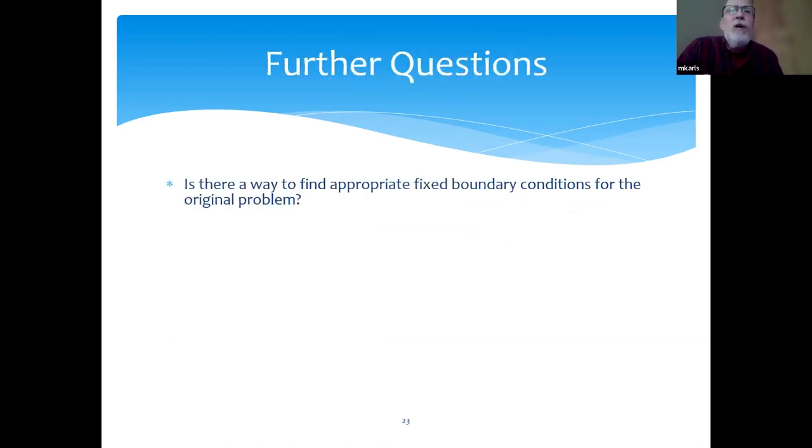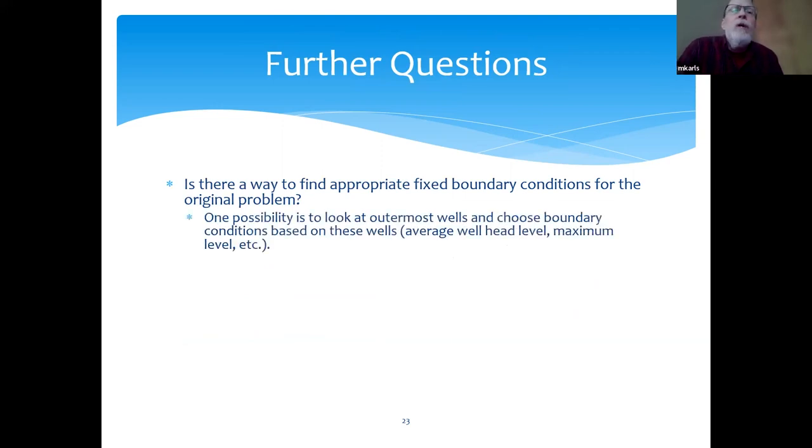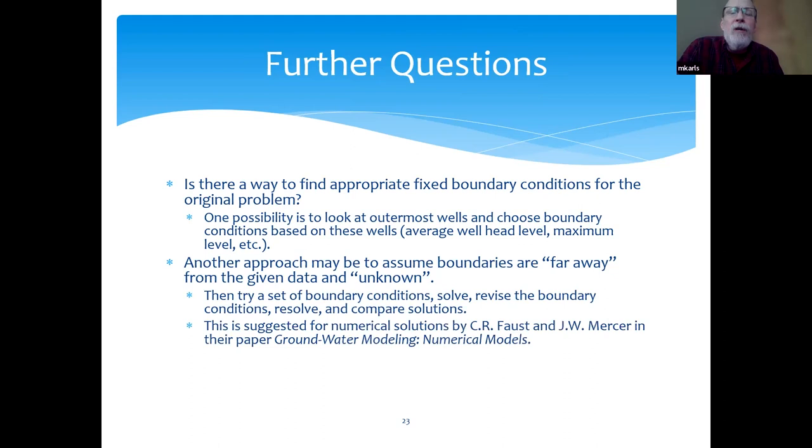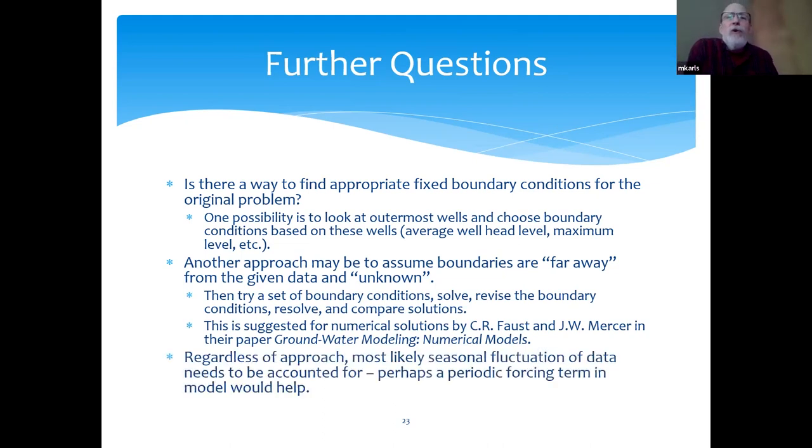Here's some further questions that came out of this project. Is there a way to find appropriate boundary conditions for the original problem? One possibility is to look at the outermost wells and choose boundary conditions based on these wells, for example, the average wellhead level or maximum level. Another approach may be to assume boundaries are far away from the given data and unknown, and then you can try a set of boundary conditions, solve, revise the boundary conditions, resolve, and compare solutions. This idea comes from a paper on groundwater modeling and numerical models by Faust and Mercer. Regardless of the approach, most likely seasonal fluctuation of data needs to be accounted for, so perhaps a periodic forcing term in the model would help.